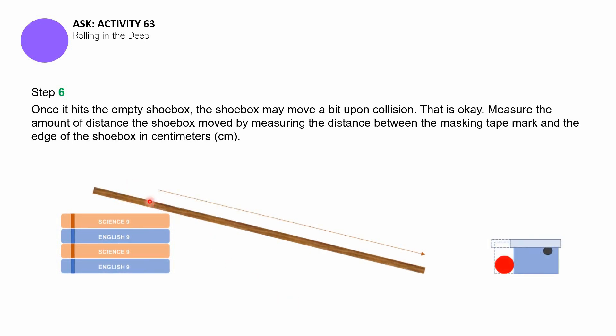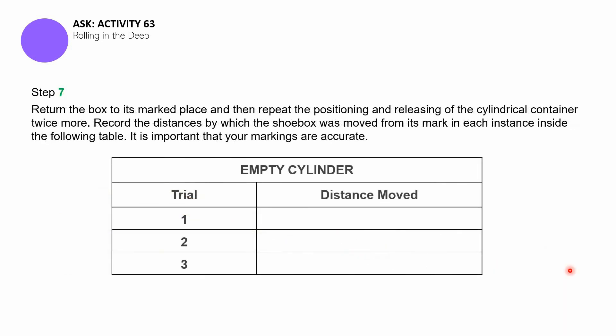For step number seven, you have to return the box to its marked place, to its original place, and then repeat the positioning and releasing of the cylindrical container twice more. So you'll be doing the release three times for the empty cylinder. So that first one was trial one, and you record here how big the distance was between the original position and the final position of the shoe box. You have to record the distances by which the shoe box was moved from its mark in each instance inside the following table. It is important that your markings are accurate.